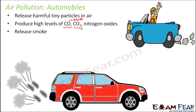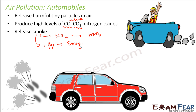Automobiles also release a lot of smoke. Smoke contains nitrogen oxides which combine with other particles in the air to form nitric acid — an extremely harmful acid that can cause acid rain and can also combine with fog to form smog. Smoke, if it combines with fog, forms smog, which is generally seen in winters. Smog can cause breathing problems, asthma, and coughing. Essentially, for all these causes, the major harmful effect is that polluted air damages the respiratory system of different animals.